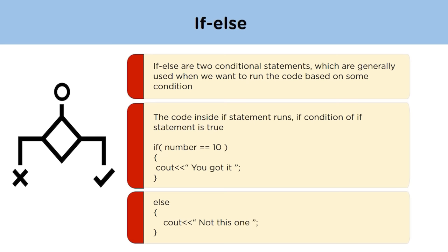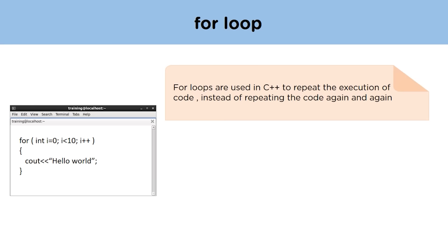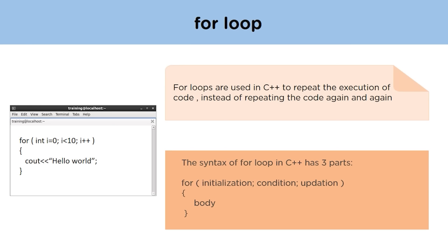Now coming to loops — first is the for loop. The for loop is the repetition control structure that allows us to repeat a block of code for a fixed number of times, instead of repeating the same code again and again. The syntax of a for loop has three parts: first is initialization, used to initialize the loop; next is condition, used to determine when to end the loop; and last is updation, used to update the loop variables.